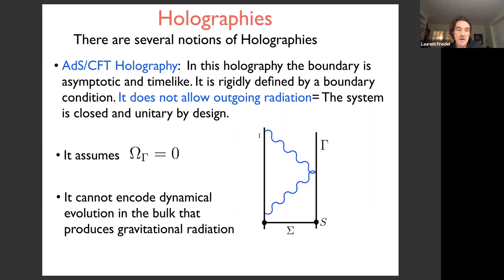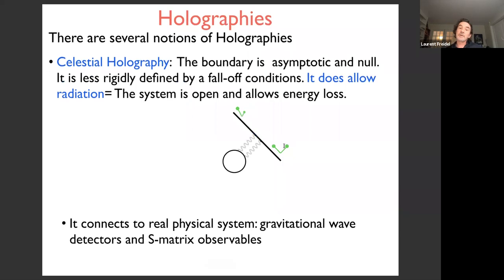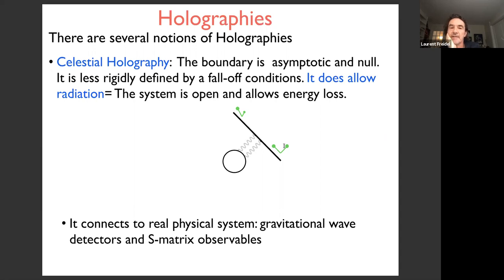This boundary condition in AdS/CFT is very restrictive: it forces the system to be thermalizing with its radiation and prevents any form of dynamics. You cannot have a black hole merger or explosion inside your AdS universe — it excludes any dynamical evolution in the bulk that produces gravitational radiation. A more interesting concept is celestial holography, where we don't impose restrictive boundary conditions, only certain fall-off conditions.